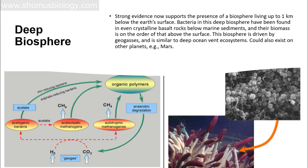Strong evidence now supports the presence of a biosphere living up to one kilometer below Earth's surface. Bacteria in this deep biosphere have been found even in crystalline basalt rocks below marine sediments, and their biomass is on the order of that above the surface. The biosphere is driven by geogases, similar to the deep ocean vent ecosystem. When we can find microorganisms one kilometer below the Earth's surface, similar environments may also exist on other planets like Mars, making it possible to find bacteria living kilometers down beneath their surfaces. Microorganisms don't always need solid food — they need an energy source and a carbon source.